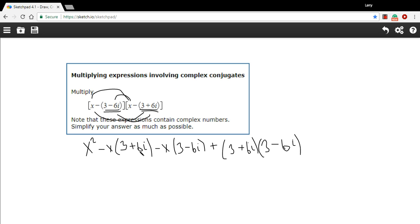So let's multiply through our negative x here and our negative x here, and let's foil this out. So x squared and minus 3x, so that's negative x times 3, and minus 6xi. And then here, we get a minus 3x, that's negative x times 3 there, and a plus 6xi. So this is a negative x times a negative 6i, that's a positive 6xi. So we've done these two chunks.